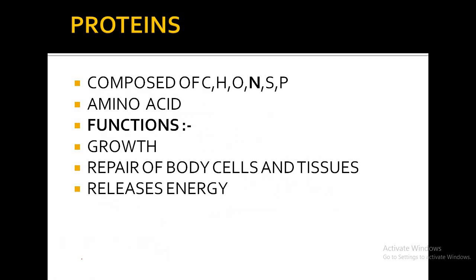The next type of nutrient is proteins. Proteins are composed of carbon, hydrogen, oxygen, nitrogen, sulfur, and phosphorus — nitrogen is very important for proteins. The composing units of proteins are amino acids. For example, if a necklace is the protein, then each bead is an amino acid. Many amino acids join together to form a polypeptide chain, and when polypeptide chains are intertwined by primary, secondary, and tertiary structures, they form proteins.